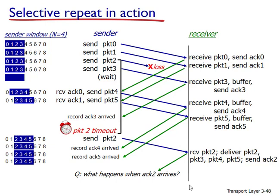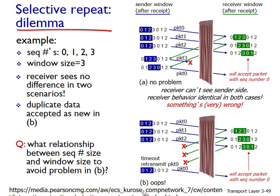This example illustrates an important aspect of selective repeat protocols: the sender and receiver will not always have an identical view of what has been received correctly. For selective repeat protocols, this means the sender and receiver windows will not always coincide. You can take as much time as needed to analyze the image. This lack of synchronization between sender and receiver windows has important consequences when faced with the reality of a finite range of sequence numbers.